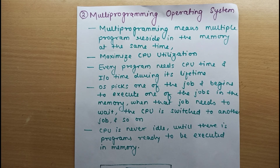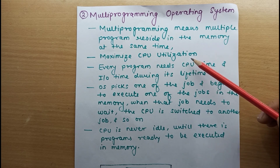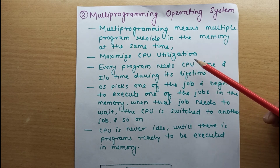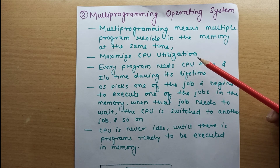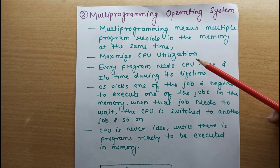Instead of sitting idle, the CPU will pick another job from memory and start execution. We are trying to maximize CPU utilization — the CPU is not idle when a job submitted to it goes for an IO operation.